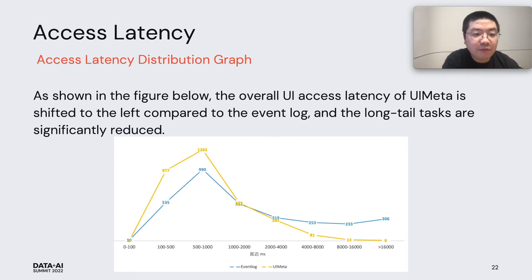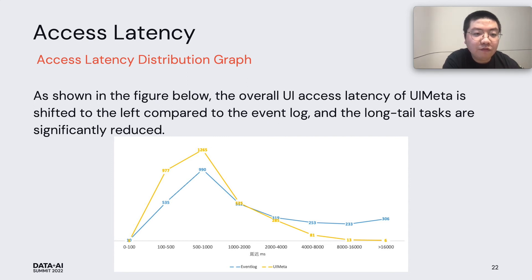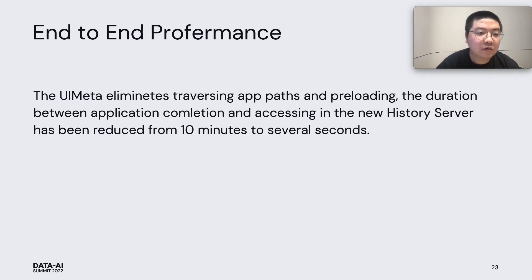This graph shows the comparison of end-to-end access latency compared to the previous Spark history server, where the x-axis is latency. From this graph, we can see UI Meta is shifted to the left compared to the event log, and the long tail cases are significantly reduced. UI Meta eliminates traversing app paths and preloading. The duration between application completion and access in the new Spark history server has been reduced from 10 minutes to several seconds.